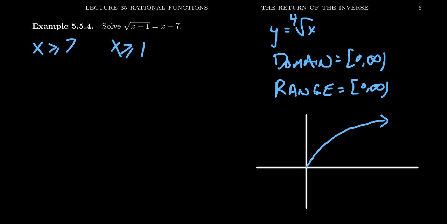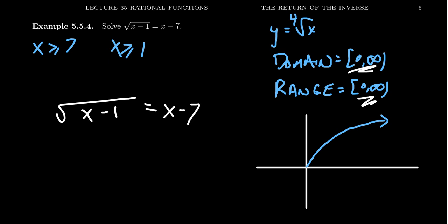My suggestion is a much simpler approach. When you see the square root of x minus one equals x minus seven, just procrastinate on the domain and range concerns — deal with them at the end. To get rid of the square root, do its inverse operation: squaring. We have to square both sides.